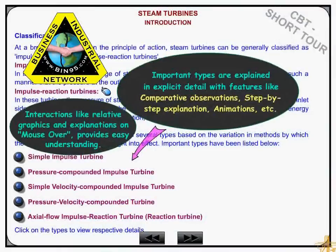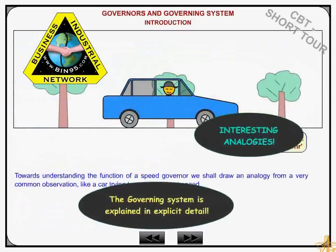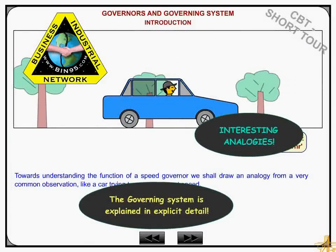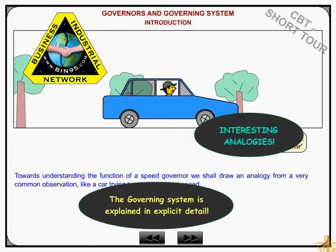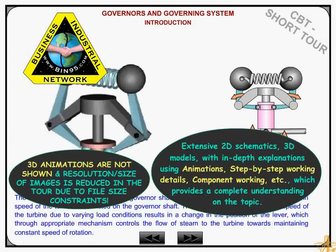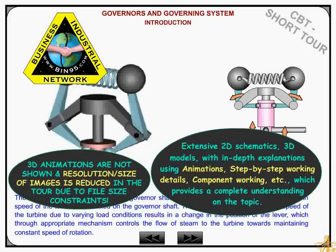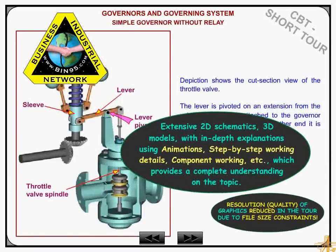Important types of steam turbines are explained in explicit detail with features like comparative observations, step-by-step explanations, and animations. The governing system is explained in explicit detail with the help of extensive 2D schematics, 3D models, and in-depth explanations.